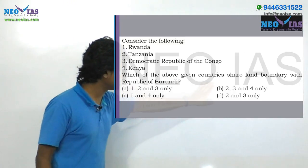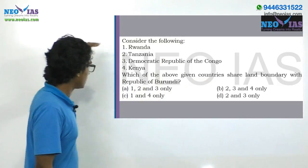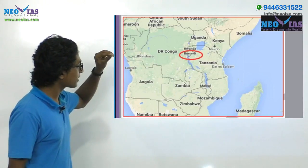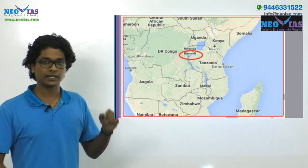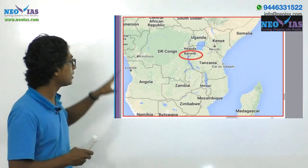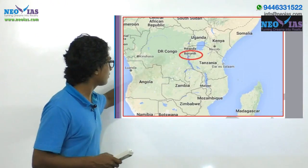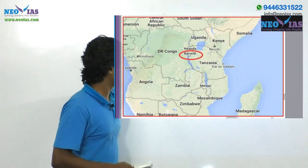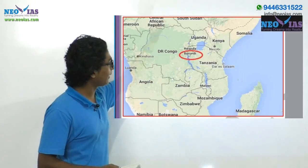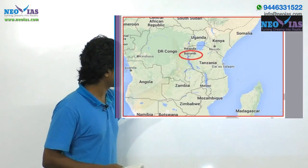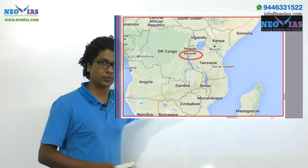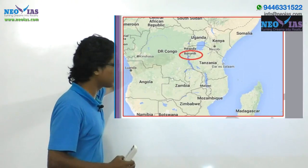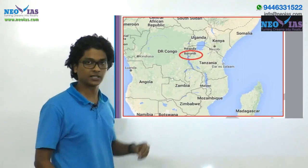Burundi is a landlocked nation in Africa. On the west of Burundi we have the Democratic Republic of Congo, on the north we have Rwanda, and on the south as well as the east we have Tanzania. So, this is a landlocked country situated between the Democratic Republic of Congo, Tanzania, and Rwanda.